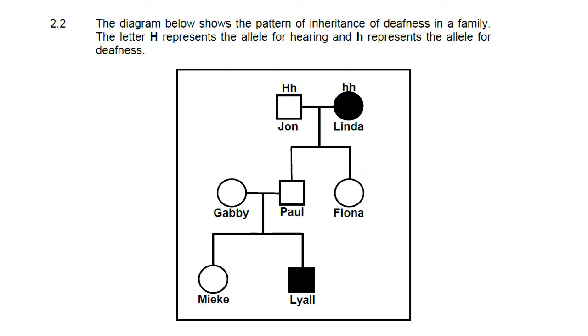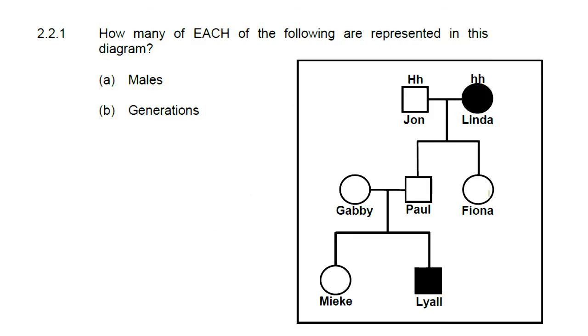In this question we have a diagram that shows the pattern of inheritance of deafness in a family. They give us the capital letter H as the dominant allele and the small letter h as the recessive allele, and the recessive allele here will represent deafness. So in the first question they want to know how many males and how many generations.